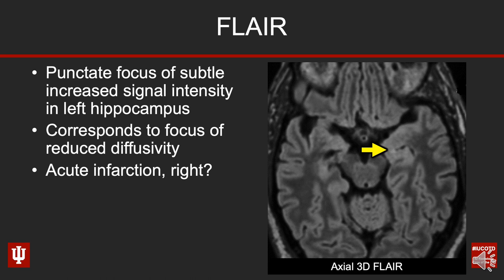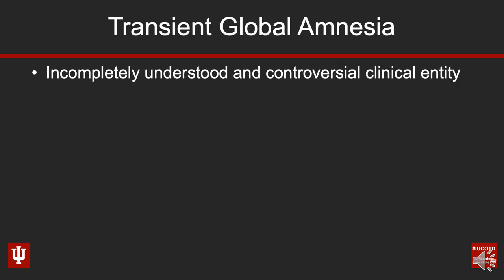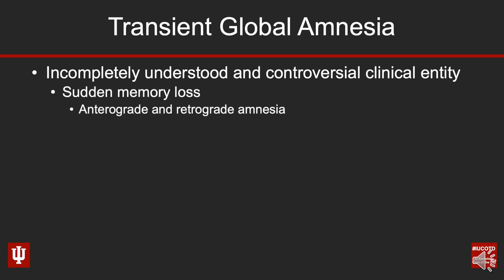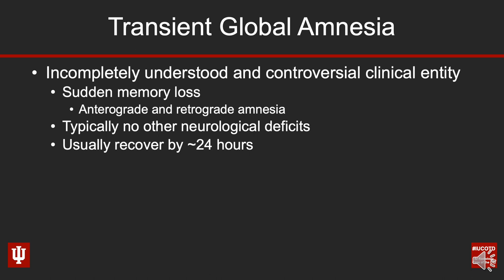So we're dealing with an acute infarction, right? No — maybe, but probably not. This is a patient with transient global amnesia, which is an incompletely understood and fairly controversial clinical entity. These patients present with sudden memory loss; they have both anterograde and retrograde amnesia. It's very classic in terms of clinical presentation. They typically won't have any other neurological deficits, and by definition they recover usually by about 24 hours, with full recovery about a day after the episode.